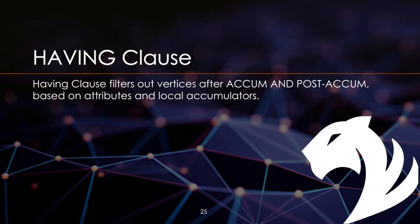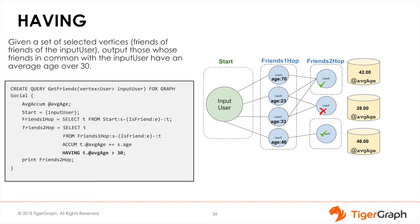These clauses all come after everything we have learned so far and help to further filter out any unnecessary data from the results. The HAVING clause acts as a filter on the selected vertices based on attributes and local accumulators. It is very good for sorting out unnecessary data from the results set.